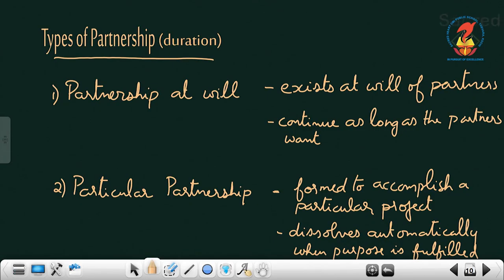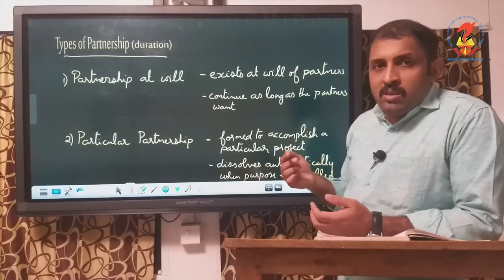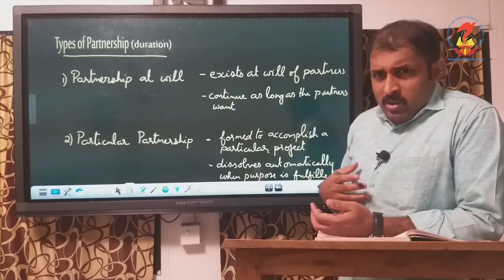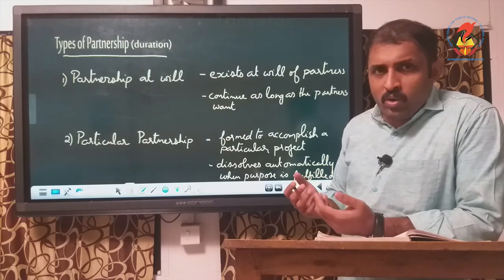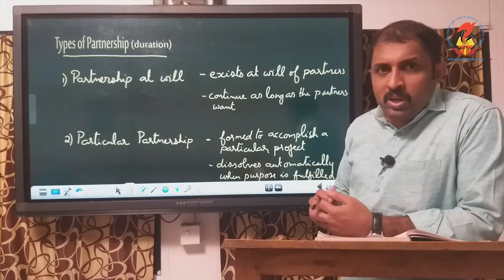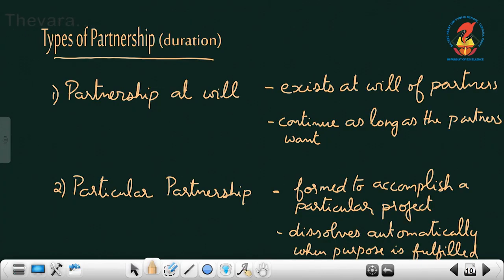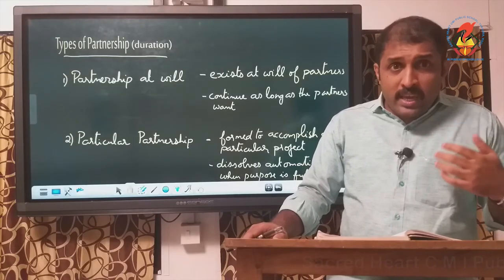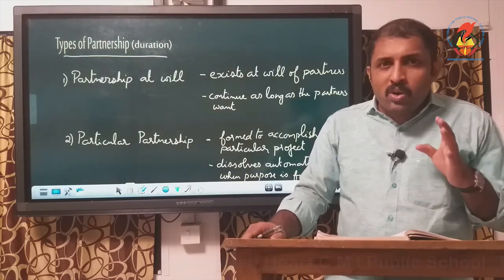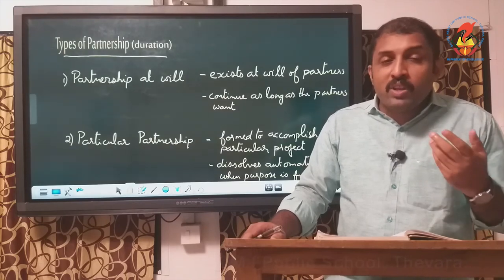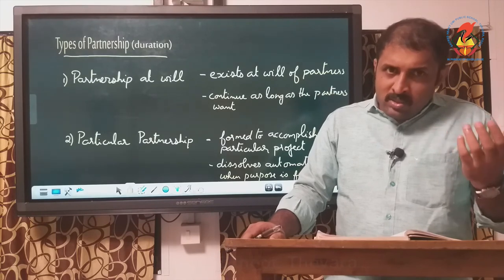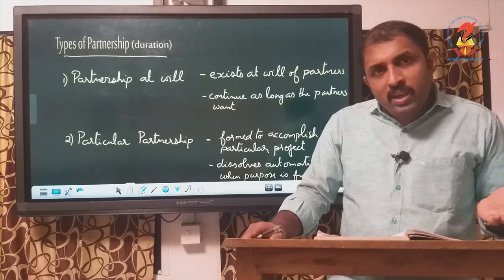Partnership at will is formed on the basis of the will of the partners — on their mutual agreement and like-mindedness. It will continue as long as the partners want it to continue, and they will close it whenever they feel they do not want to continue. That is why it is called partnership at will — it is formed and dissolved entirely according to the will of the partners.